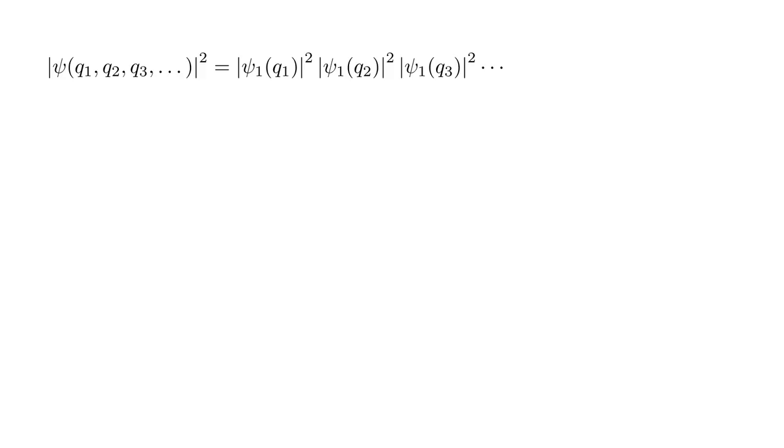If we want to, we can make use of the probability interpretation of the wave function. The magnitude squared of the string's wave function equals the magnitude squared of the first mode wave function times the magnitude squared of the second mode wave function, and so on.